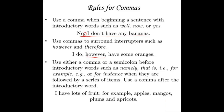Use either a comma or a semicolon before introductory words such as namely, that is, i.e., for example, e.g., or for instance, when they are followed by a series of items, and use a comma after the introductory word. For example: "I have lots of fruit; for example, apples, mangoes, plums, and apricots" — the semicolon comes before "for example" and the comma comes after it.